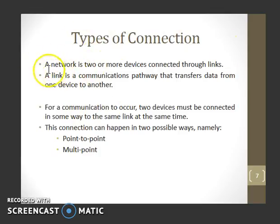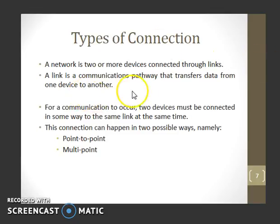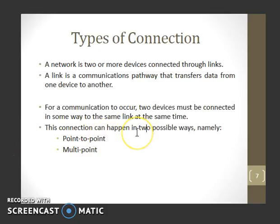Coming to types of connection: a network is two or more devices connected through links. A link is the communication pathway that transfers data from one device to another. For communication to occur, two devices must be connected in some way — some link should be there between them. This connection can happen in two possible ways: point-to-point connection or multipoint connection.